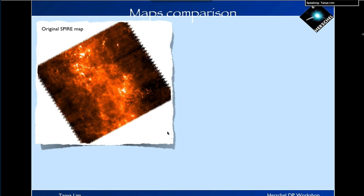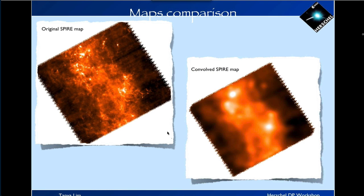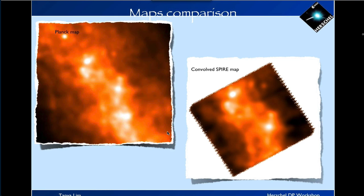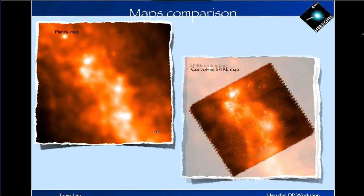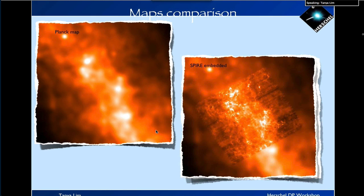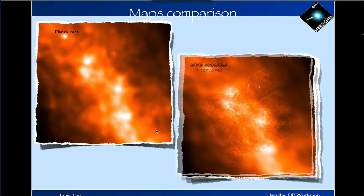This is a Spire map, and here it is convolved with the Planck beam — resolution is much worse, but it gives the same overall offset as Planck, calculating a single number applied to the whole map. This is the Planck map for that convolved Spire map; the two spacecraft data agree very well. This is the embedded map, and this is the embedded plus convolved result.